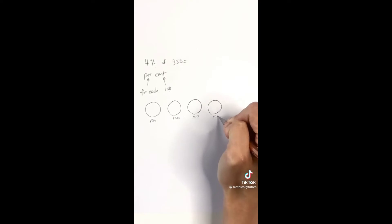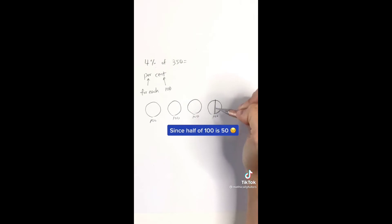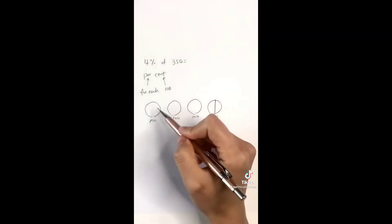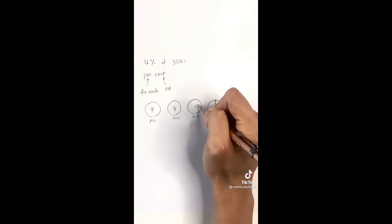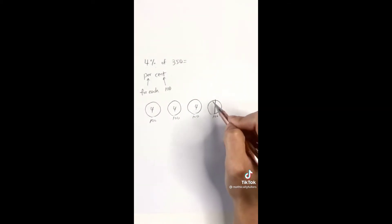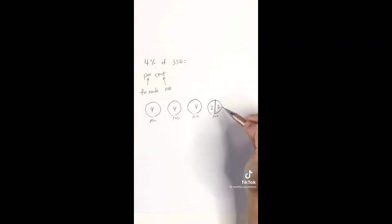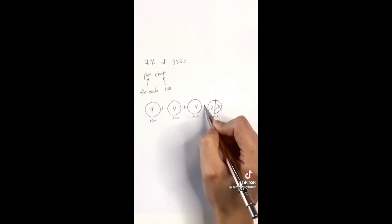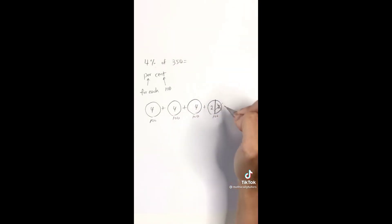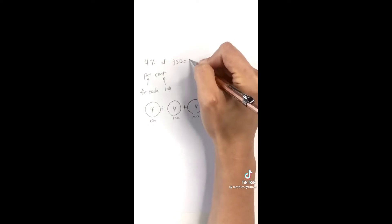We only want 350, so we cut that last 100 in half. How many do we have in each 100? We only have four. So we have four in here, four in here, four in here, and the last piece is four — but we cut it in half, so each part is two. We don't need the other half, so we add up: four plus four plus four plus two equals 14. So four percent of 350 is 14.